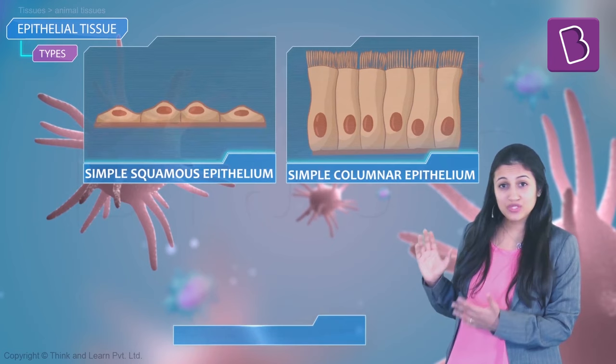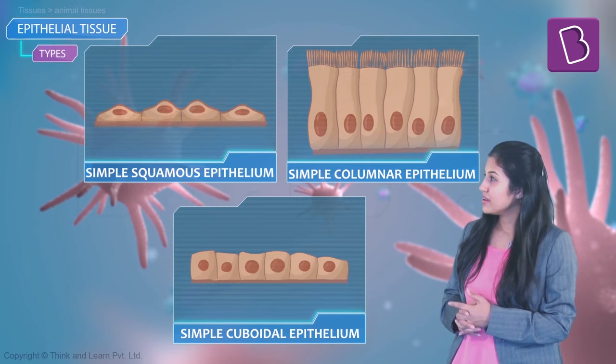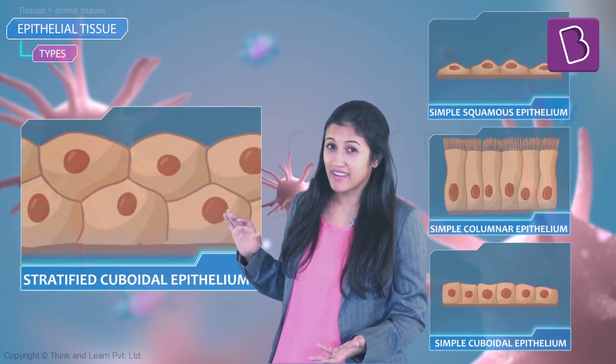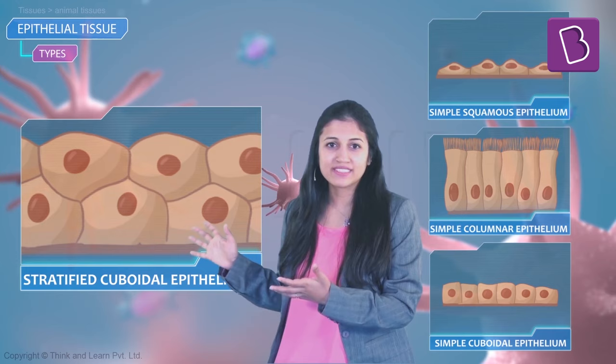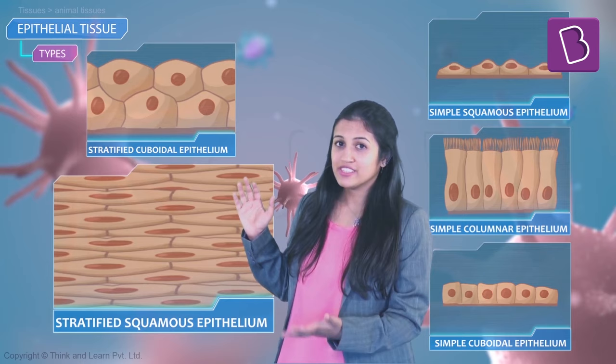Simple cuboidal has a single layer of cuboidal cells. What about when there's more than one layer? It's stratified. With cuboidal cells, that gives you stratified cuboidal cells.